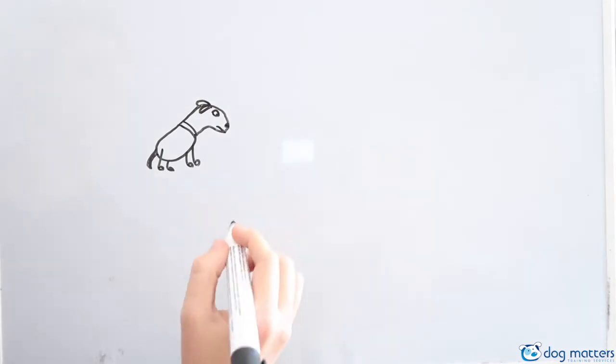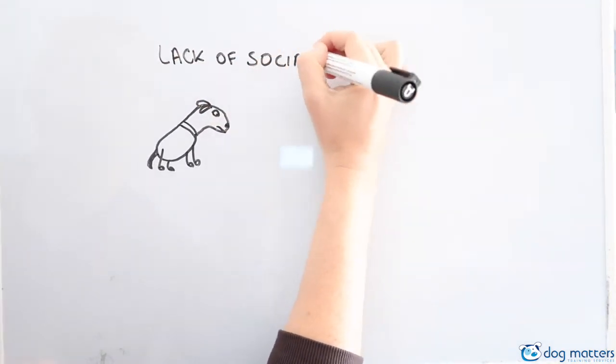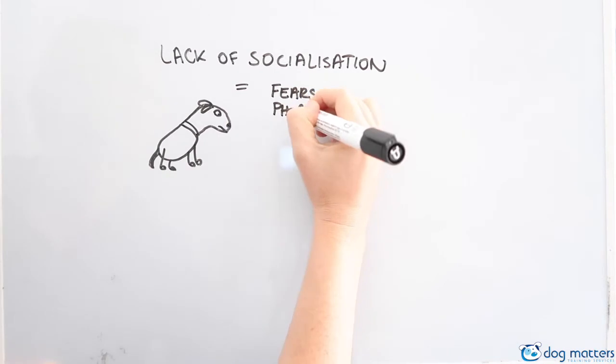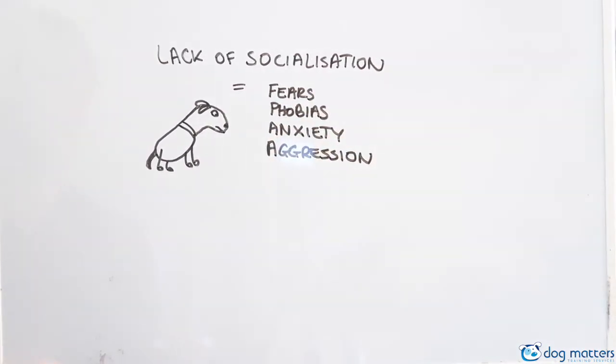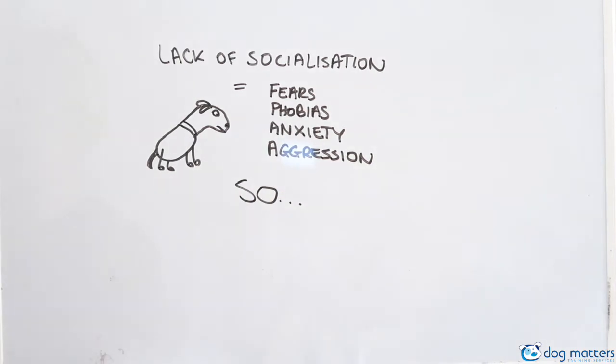A puppy with a lack of socialization can be fearful, anxious, and even aggressive to anything new. The whole world is scary.